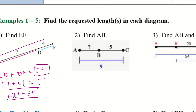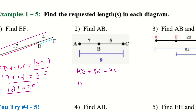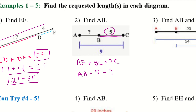Let's look at number 2. This time we're trying to find AB. I'll set it up the same way: AB plus BC equals the entire segment AC. I'm trying to find AB, so I'll leave that as AB. BC is 5, and the whole line AC is 9. Using some algebra to solve, AB equals 4.